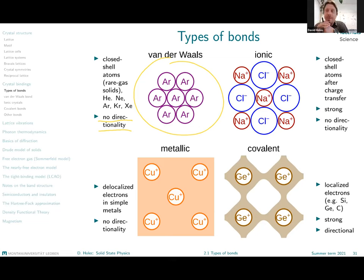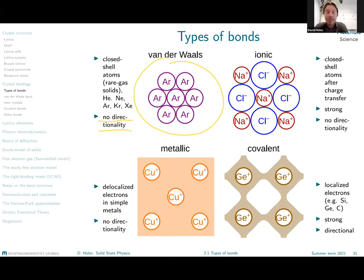Another type of material where Van der Waals bonding is prominent is graphite, as you probably know, and many other layered materials where the interplanar binding between the graphene planes is mostly via Van der Waals bond. The situation there is a little more complicated — it is not only Van der Waals bond — therefore we do not list it here as a typical example.